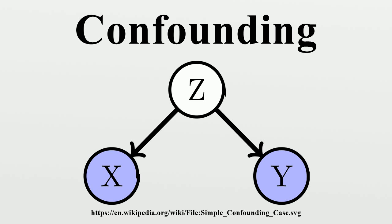Confounding by indication has been described as the most important limitation of observational studies. Randomized trials are not affected by confounding by indication due to random assignment. Confounding variables may also be categorized according to their source: the choice of measurement instrument, situational characteristics, or inter-individual differences. An operational confounding can occur in both experimental and non-experimental research designs, when a measure designed to assess a particular construct inadvertently measures something else as well. A procedural confounding can occur in a laboratory experiment or quasi-experiment, when the researcher mistakenly allows another variable to change along with the manipulated independent variable. A person confounding occurs when two or more groups of units are analyzed together despite varying according to one or more other characteristics.